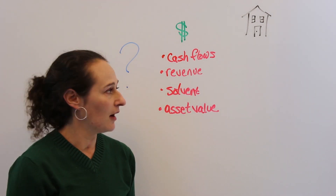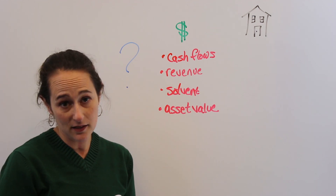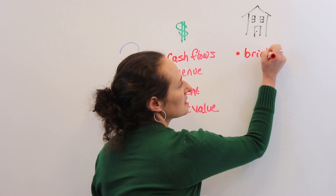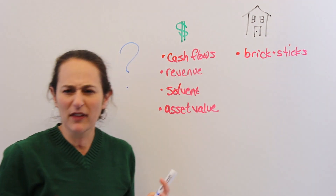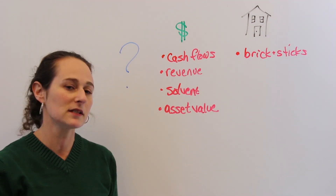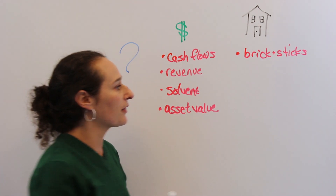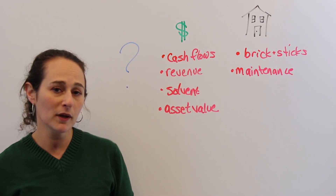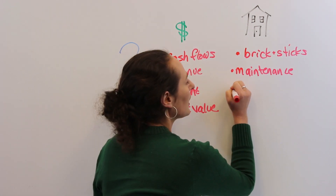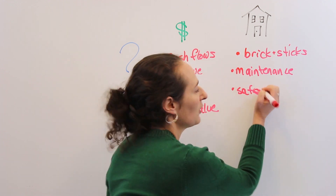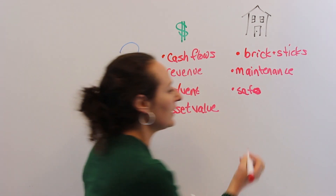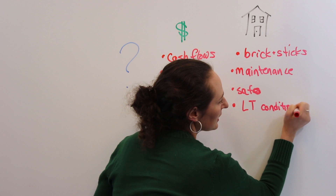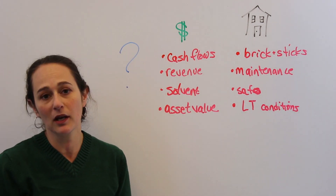Another big dimension of asset management is physical asset management. So not just what the money side is doing, but what's the building doing? I'm looking at the soundness of what we call the bricks and sticks — the shape of the actual building. Is it in good shape? Is it falling apart or is it in good repair? Are there sufficient maintenance and repairs happening? Is this building crumbling or are we taking good care of it? Big picture, is this a safe and attractive place to live or work? And looking long-term, are there conditions and money in place to keep it in good repair over time?